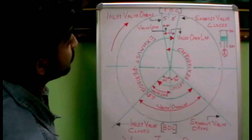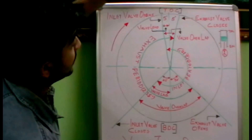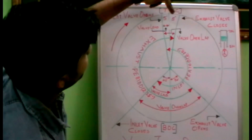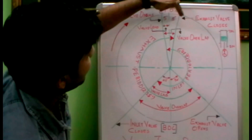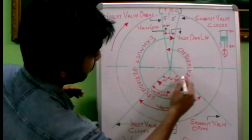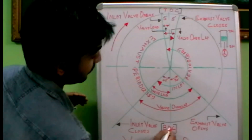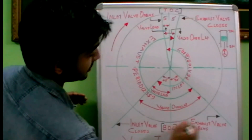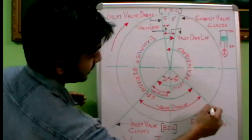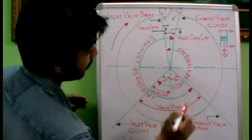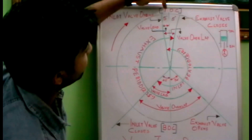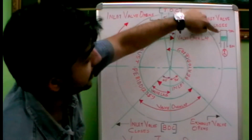The exhaust valve closes 5 degrees after TDC and opens about 50 degrees before BDC. You can see that the exhaust valve opens 50 degrees before the bottom dead center, and it closes about 5 degrees after the top dead center.